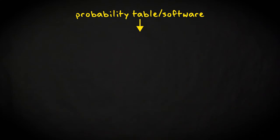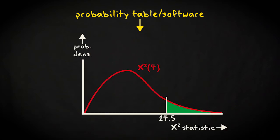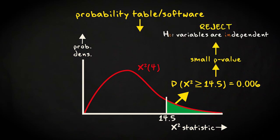We can use a probability table or software to find the p-value associated with the value of 14.5 for a chi-squared distribution with 4 degrees of freedom. It turns out to be 0.006. This is very small, so we reject the null hypothesis of independence.